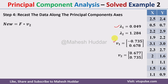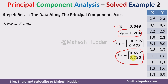Now we select the eigenvector based on eigenvalues. Since we want to reduce from 2D to 1D, we select one eigenvalue — the one with the maximum value. Comparing λ₁ = 0.049 and λ₂ = 1.282, λ₂ is larger, so we select λ₂ and its associated eigenvector v₂ as the principal component. If reducing from 3D to 2D, we would select the two largest eigenvalues.